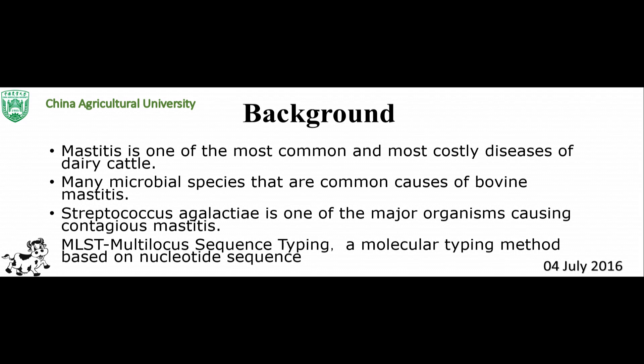Staphylococcus aureus, Streptococcus agalactiae, Streptococcus dysgalactiae, Streptococcus uberis, and E. coli account for the vast majority of cases. Streptococcus agalactiae is also known as Lancefield's group B Streptococcus. It was first reported as a cause of bovine mastitis in 1887. Streptococcus agalactiae is a special pathogen — it is difficult for it to survive outside the udder, and it is perhaps the most contagious mastitis pathogen.